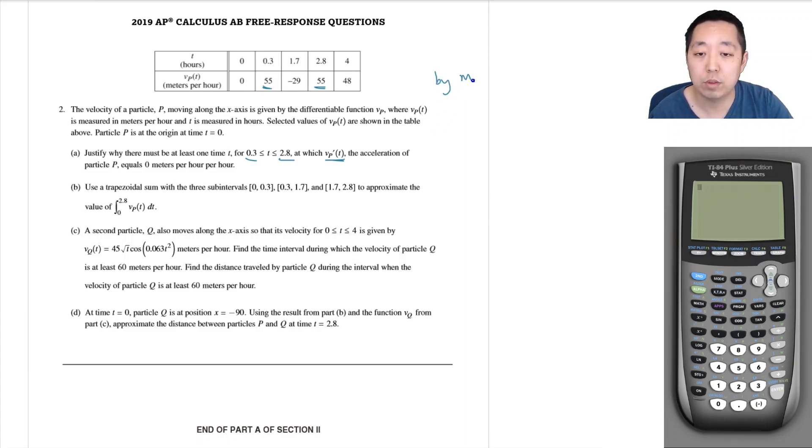By mean value theorem, there exists (this is the symbol for 'there exists' as shorthand) a time C such that VP prime of C is equal to the secant line slope, which would be VP of 2.8 minus VP of 0.3 divided by 2.8 minus 0.3, and that's equal to zero. There exists C between, technically, 0.3 less than C less than 2.8.